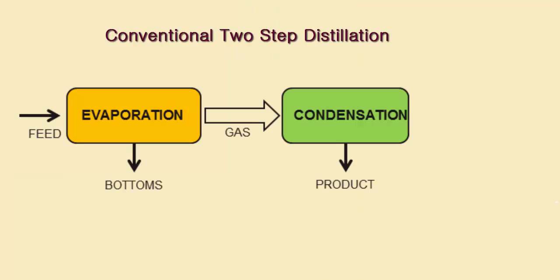This diagram represents distillation as it has been practiced through the ages. It is a two-step process. In step one, called evaporation, a feed liquid is caused to boil through the addition of heat. This generates a gaseous stream and a liquid residue or bottom stream.